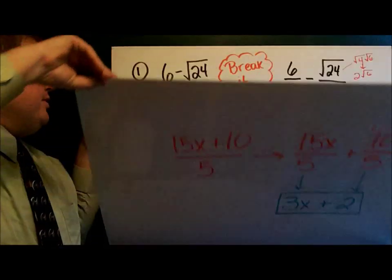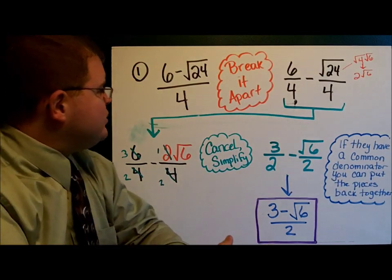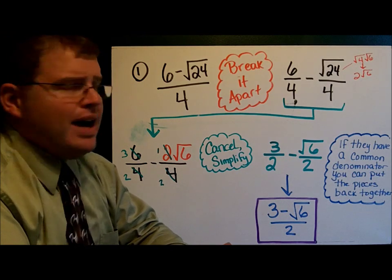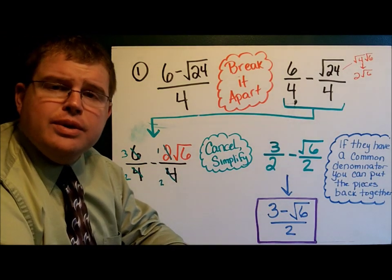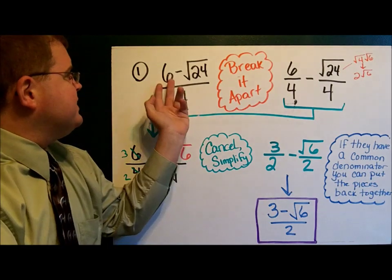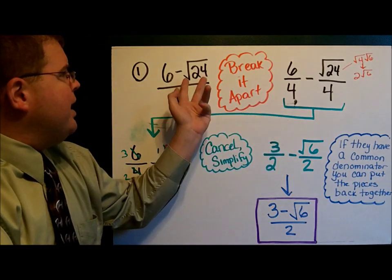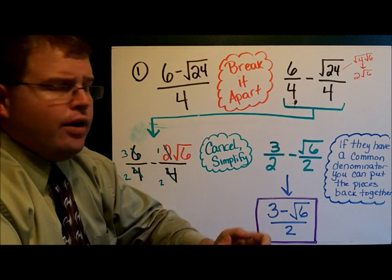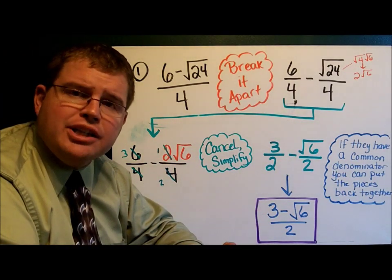Our first example here tonight is 6 minus the square root of 24 divided by 4. First thing you do is break it apart. So I have 6 over 4 minus the square root of 24 over 4. Now I have two separate fractions.